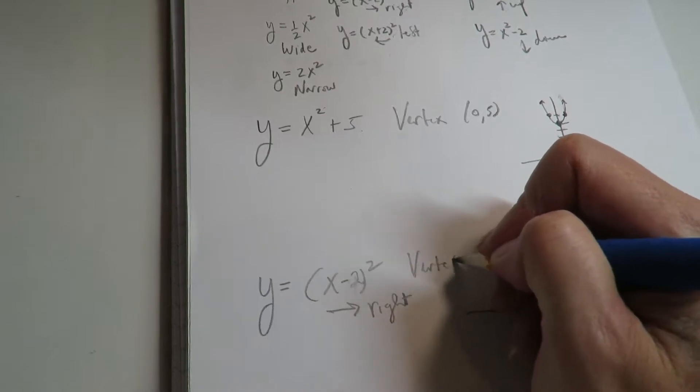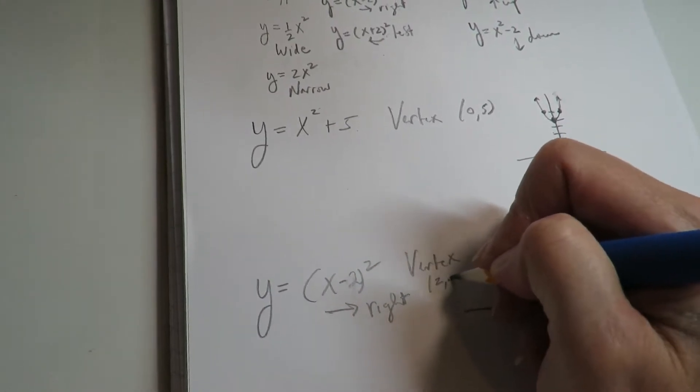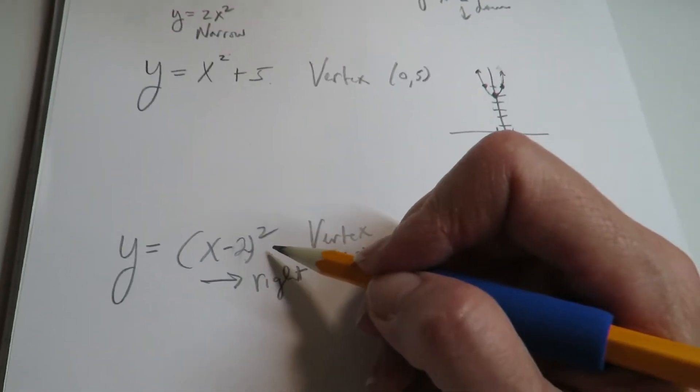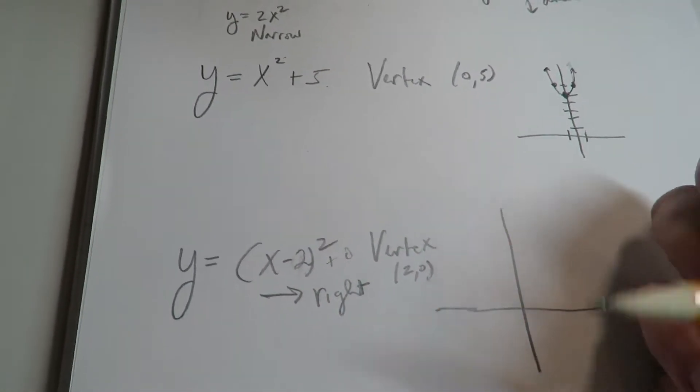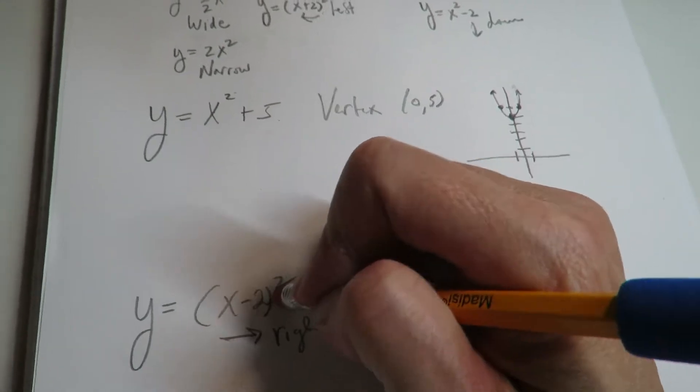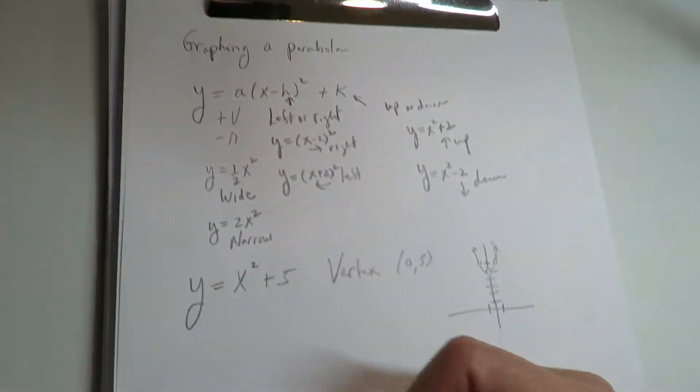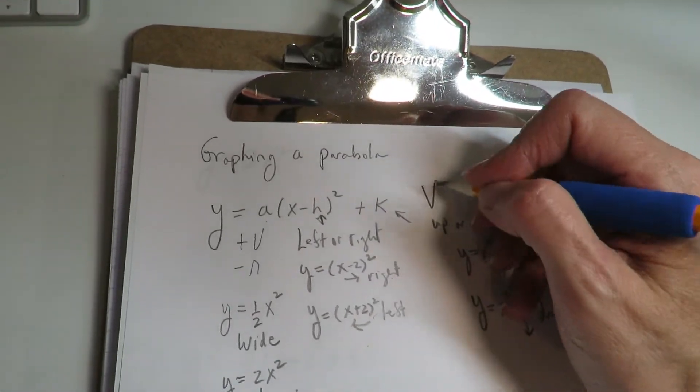So the vertex on this guy is 2, 0. There's no k value, and nobody's going to write like plus 0 on the outside for you. So if there's nothing on the outside, your k is the outside value. Sorry, 0 is the outside value.